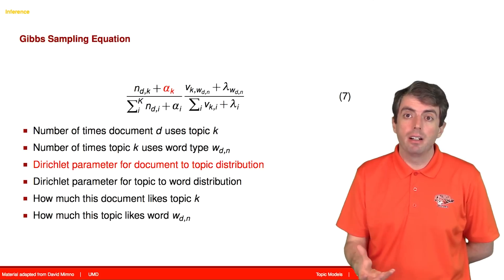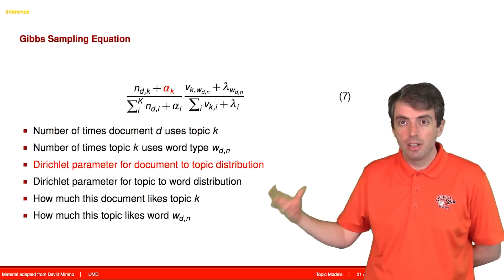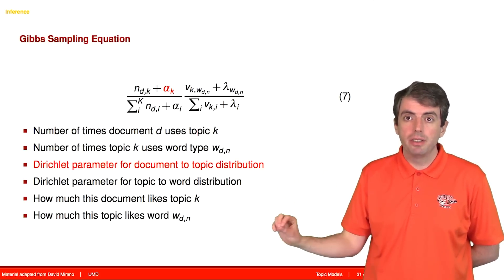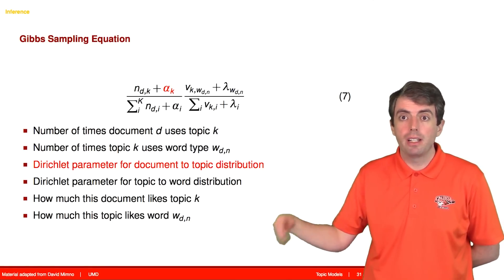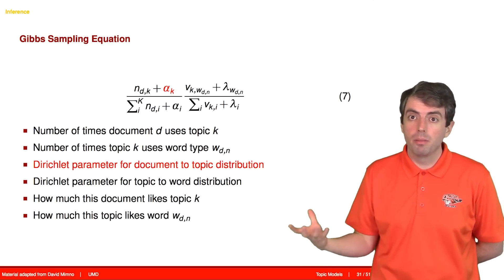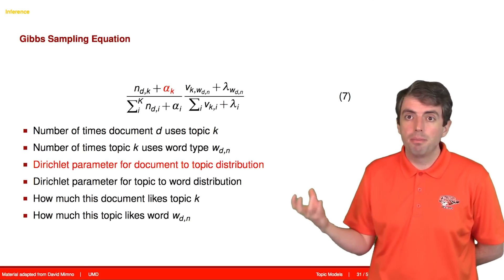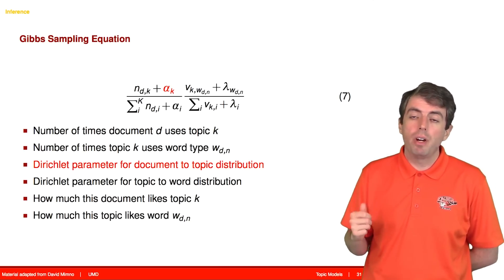Next, we're going to add in the Dirichlet prior for the Dirichlet distribution that generates the multinomial distribution over topics for each document. And this acts as a smoothing term. So before we talked about smoothing in terms of Naive Bayes, and this functions in the same way.